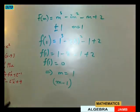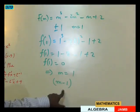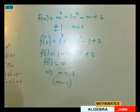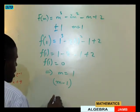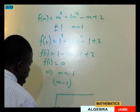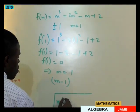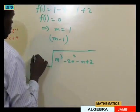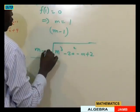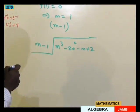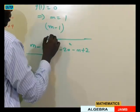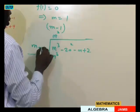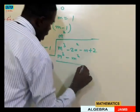Now that we have identified m minus 1 as a factor, we use long division to find the other factors. We divide the polynomial m cubed minus 2m squared minus m plus 2 by m minus 1. Dividing m cubed by m gives m squared. Multiplying m squared by m minus 1 gives m cubed minus m squared. We subtract, and m cubed cancels out, leaving minus 2m squared minus minus m squared.